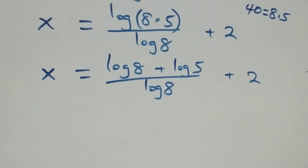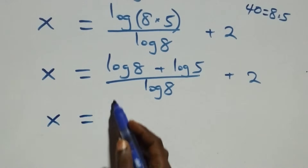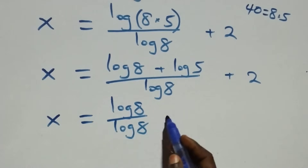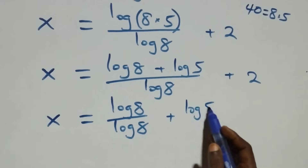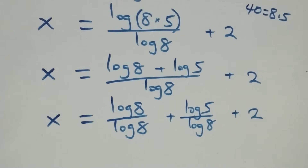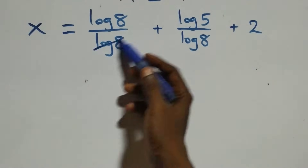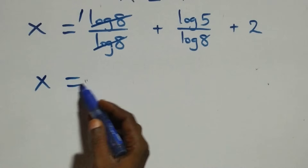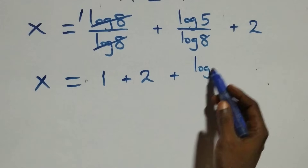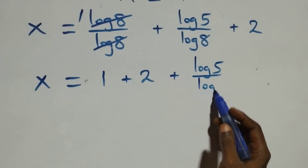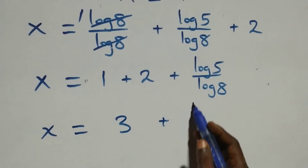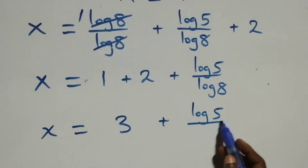We separate into two fractions: x equals log 8 over log 8, plus log 5 over log 8, plus 2. Log 8 over log 8 equals 1, so x equals 1 plus 2 plus log 5 over log 8, which gives x equals 3 plus log 5 over log 8.